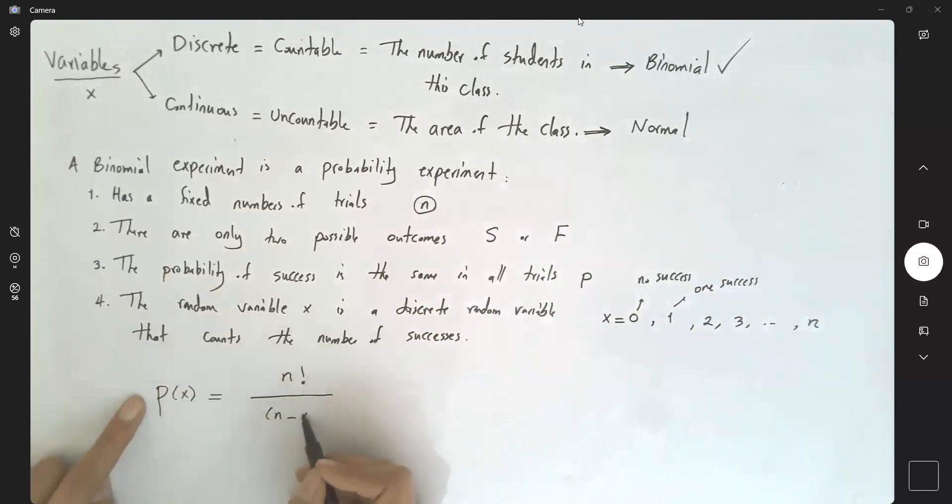n minus x factorial times x factorial, times p to the x, times 1 minus p to the power n minus x.